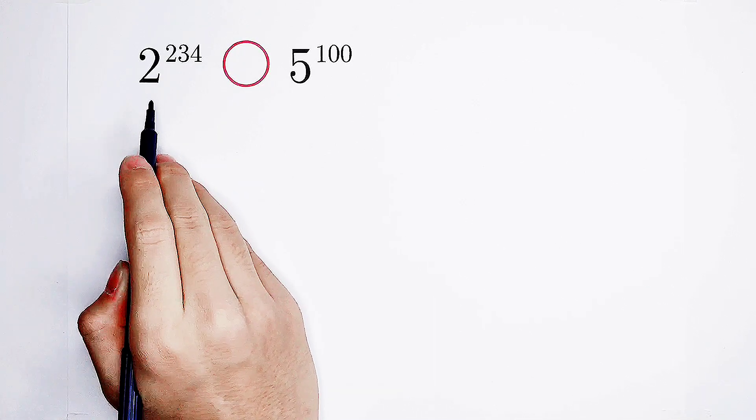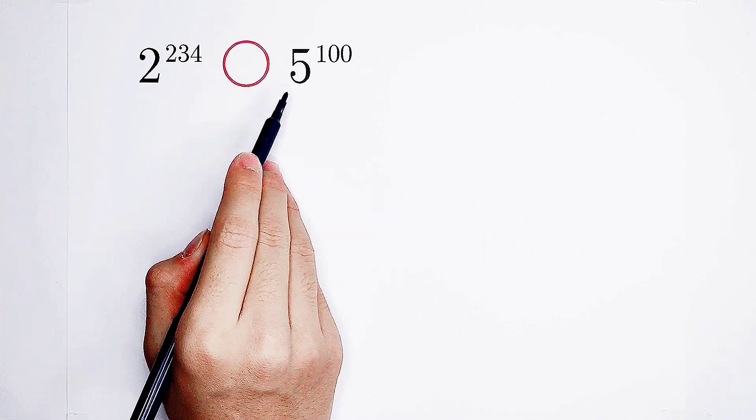Which is larger? 2 to the power of 234, or 5 to the power of 100?